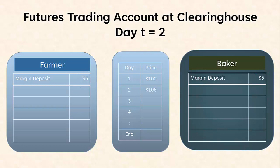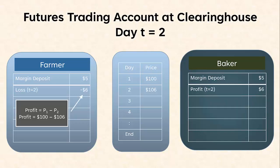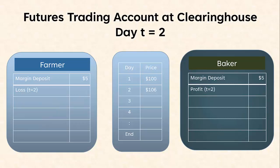Now let's move forward to day T=2. At the end of the day, the futures exchange posts an end-of-day settlement price of $106. So at the end of day 2, the baker, who is long, has a daily profit of $6 since the price rose on day 2. The farmer has a short position and so loses $6. The Clearinghouse takes $6 from the farmer's account and transfers it to the account of the baker. This daily reckoning is called marking to market.